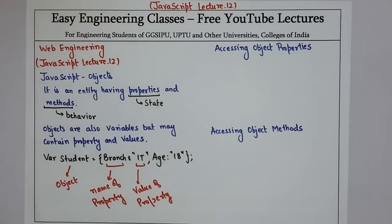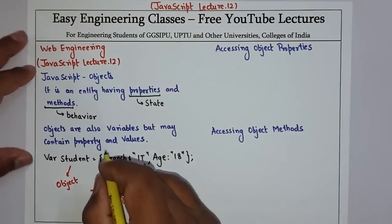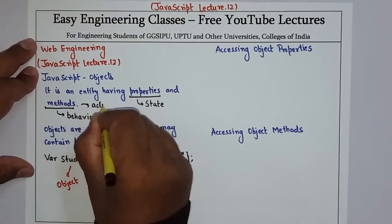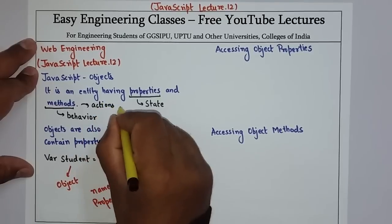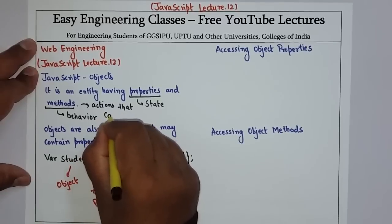This is the type of object — you can select certain methods. There are certain methods we will see further. Those methods are the actions that you can perform on an object. So methods are nothing but these are the actions that can be performed on an object.